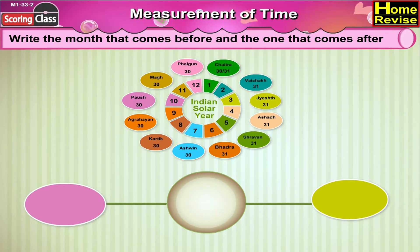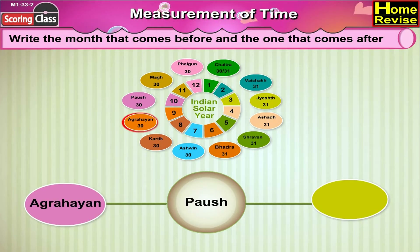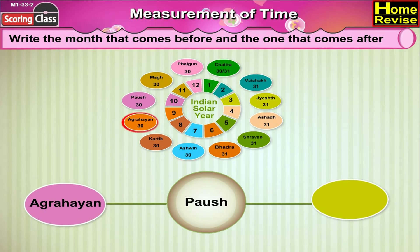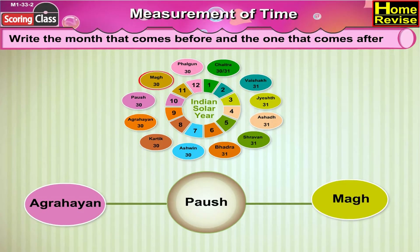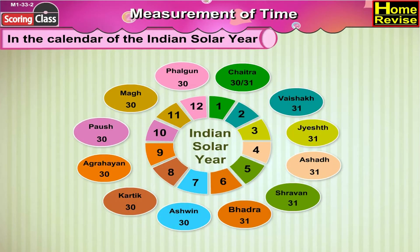Paush. Before Paush comes Agrahaen, and after Paush comes Magh. In the calendar of the Indian solar year,